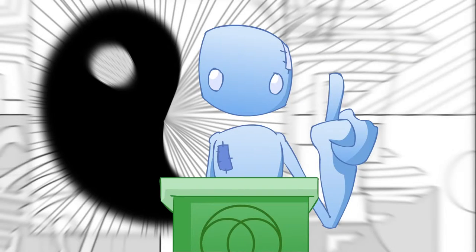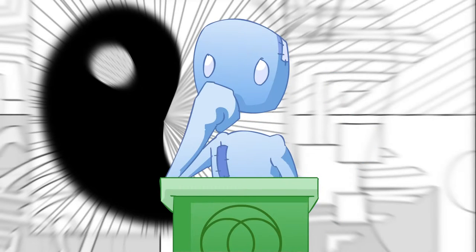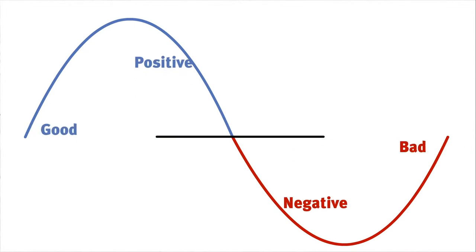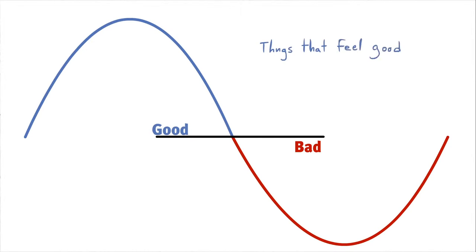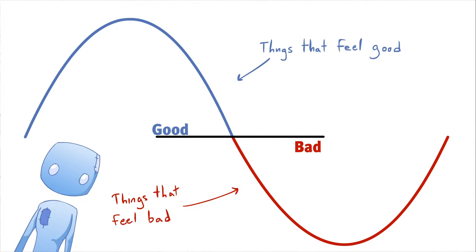I know I just said positive and negative are not good and bad. In this example, I'm going to use good and bad in place of positive and negative. By good and bad, I mean things that feel really good and things we do want, and things that feel really bad and things we don't want. Just go with it.